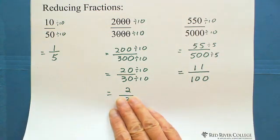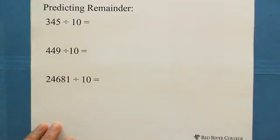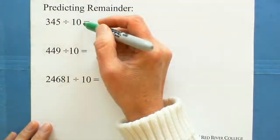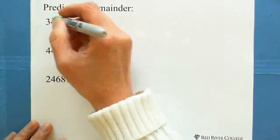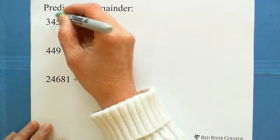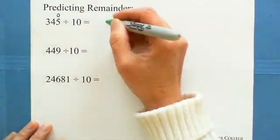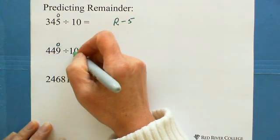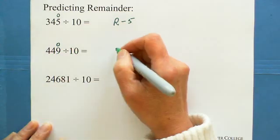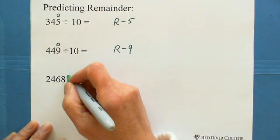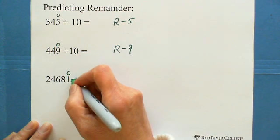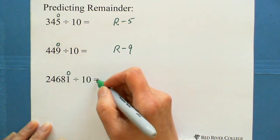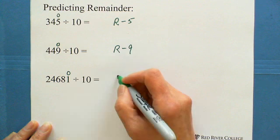For predicting the remainder when dividing by 10: 345 ÷ 10 — since it doesn't end with 0, it's not divisible. The closest number below divisible by 10 is 340, so the remainder is 5. For 449, the closest is 440, so the remainder is 9. For 24,681, the closest number is 24,680, which is divisible by 10, so the remainder is 1.